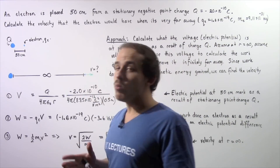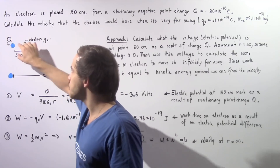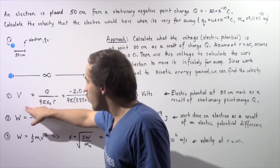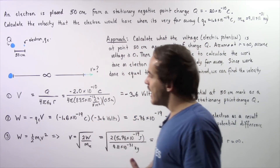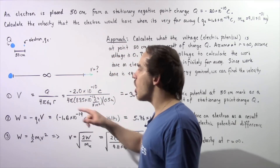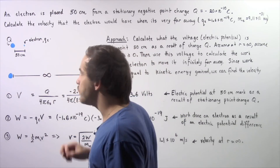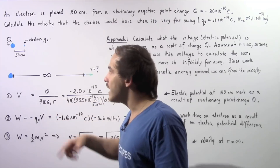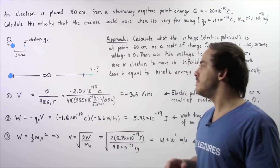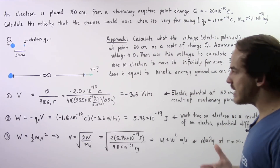Beginning with step one, we want to calculate the voltage at the point 50 centimeters away from the stationary point charge, assuming the voltage at an infinite distance is zero. We apply the equation from the previous lecture: voltage equals Q divided by 4 pi epsilon naught multiplied by R, where R is the distance between the charge and the point. Our R is 0.5 meters, epsilon naught is 8.85 times 10 to the negative 12 Coulombs squared per Newton times meters squared, and Q is negative 2 times 10 to the negative 10 Coulombs.